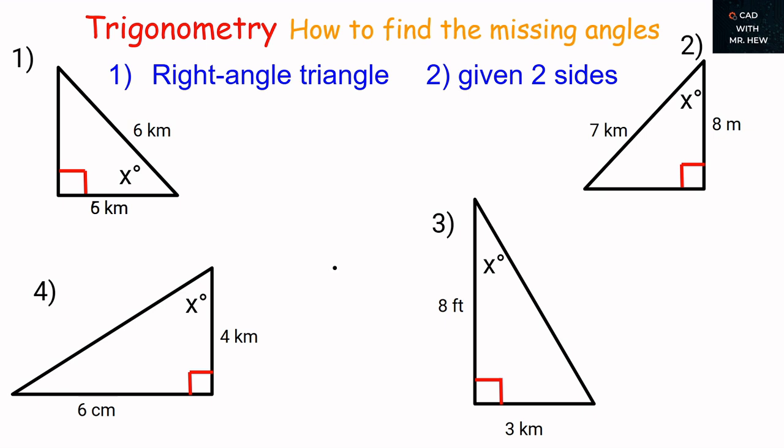In today's video, we'll be looking at trigonometry, and we'll be using the principles of trigonometry to find the missing angles for the four right-angled triangles shown on the screen. We'll be given two sides for the four triangles, and we'll be calculating the two angles for questions 1, 2, and 3, and one angle for question 4.